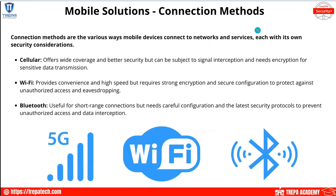Different mobile connection methods — just going over the basics so we understand how they increase our threat vector. Cellular offers wide coverage via cell towers. Wi-Fi provides convenience and high speed, but we have to be aware, especially for mobile users — like using a phone in a coffee shop that doesn't employ advanced security. Maybe we have an MDM enforcement policy that says they must use VPNs when connecting to low-security or unsecure wireless networks.